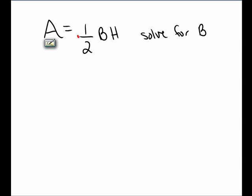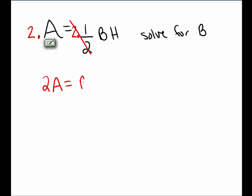First, we'll clear fractions. I'll multiply both sides of the equation by 2. Now on the left, I have 2A. On the right, 2 times one half cancels, leaving B times H.